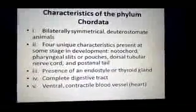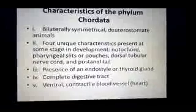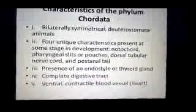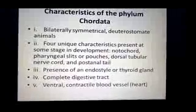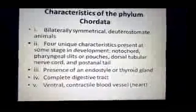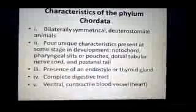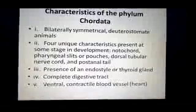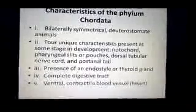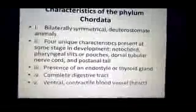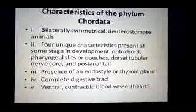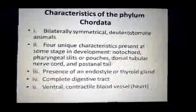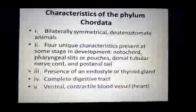There are four unique characteristics of chordates that are not found in other animals. These characteristics appear simultaneously or one by one during their development. The first unique characteristic is the presence of the notochord — a supportive rod-like structure which in some chordates is replaced by the vertebral column.